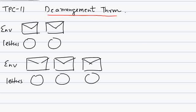Now I'll discuss TPC-11, that's the derangement theorem. Let's take an example to understand what this theorem is. Suppose there are two letters and two envelopes, and these envelopes are corresponding envelopes.